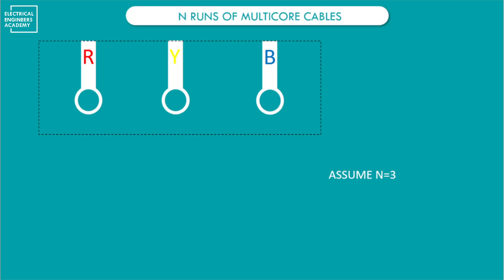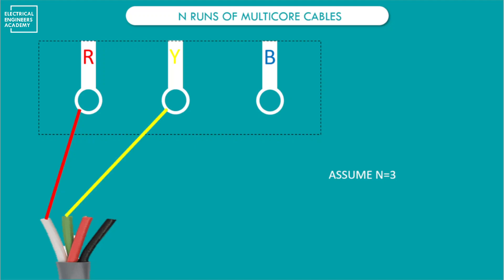For multi-core cables, we need to understand how the cables are connected to the terminals. I have drawn here three terminals — these could be a motor, or any type of load that has three terminals: R, Y, B. This is the first cable run — a four-core cable. The first core connects to R, the second core connects to Y, and the third core connects to the B terminal. This represents a single run.